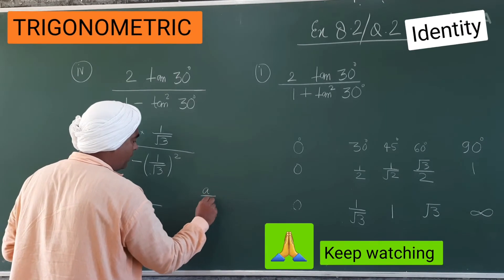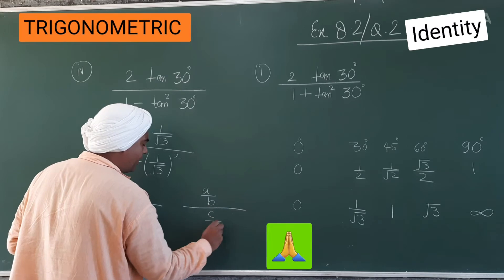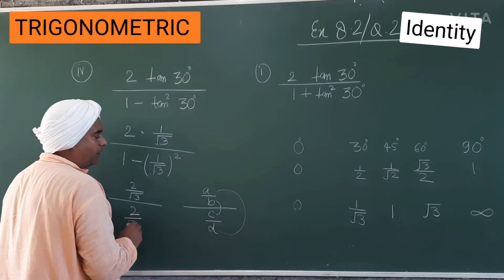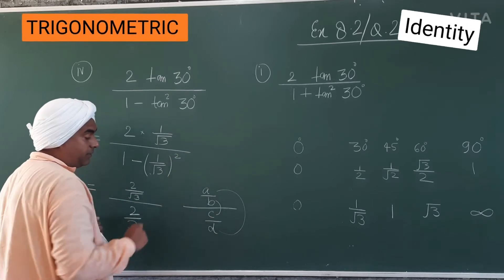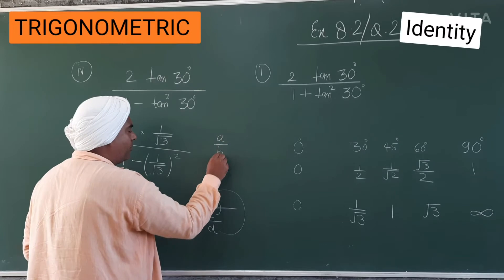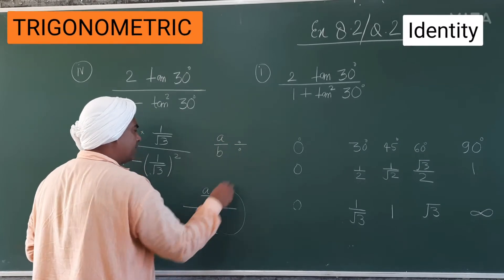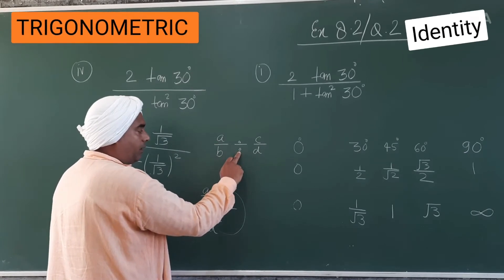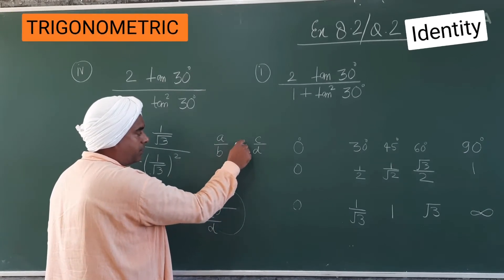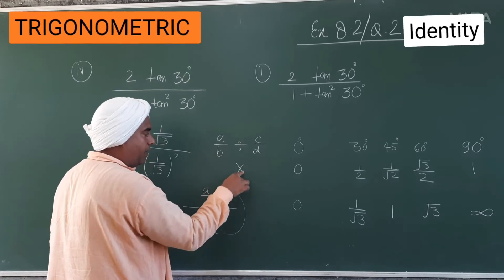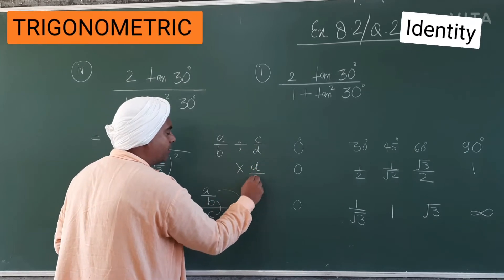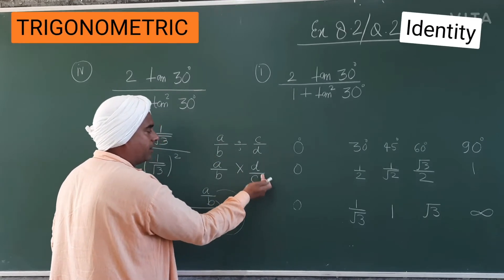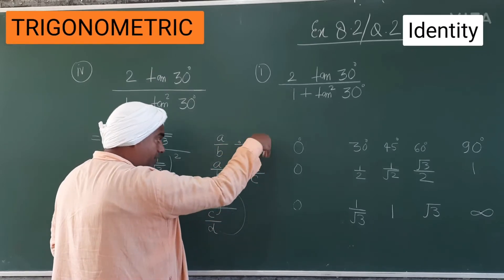Now we have one fraction divided by another fraction. The rule is: a/b divided by c/d equals a·d upon b·c. The reason is that a/b divided by c/d — division's inverse process is multiplication, and the multiplicative inverse of c/d is d/c. So a/b stays as it is, and we multiply by d/c. Two opposite operations cancel each other out.